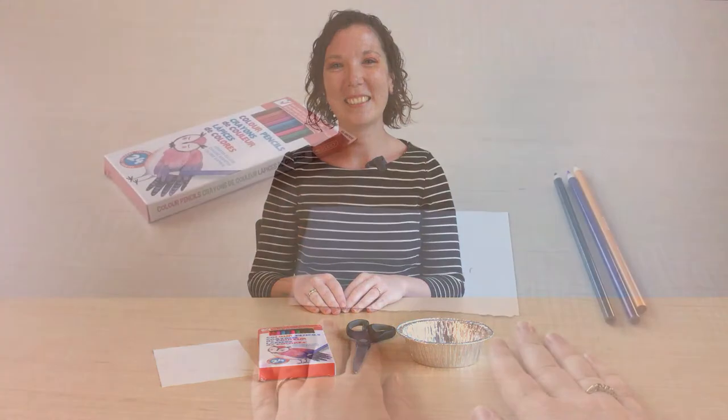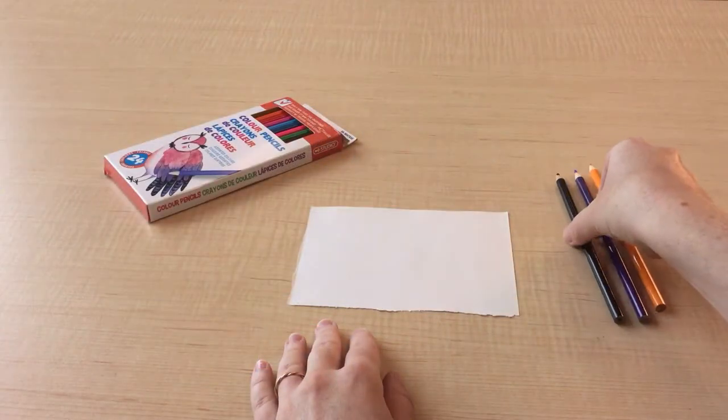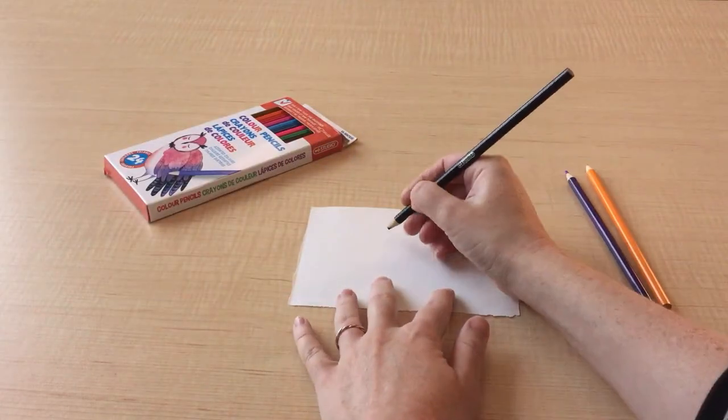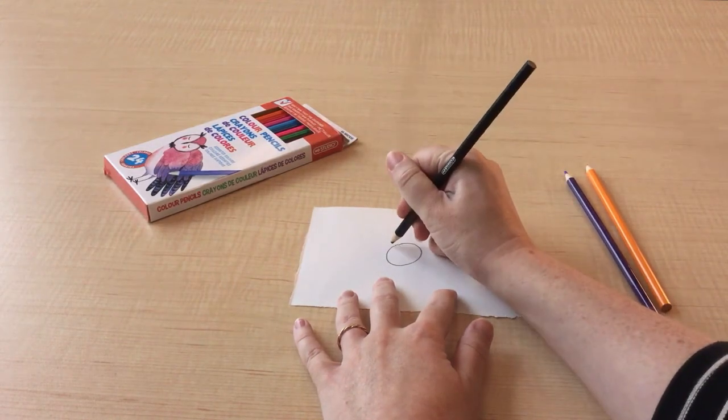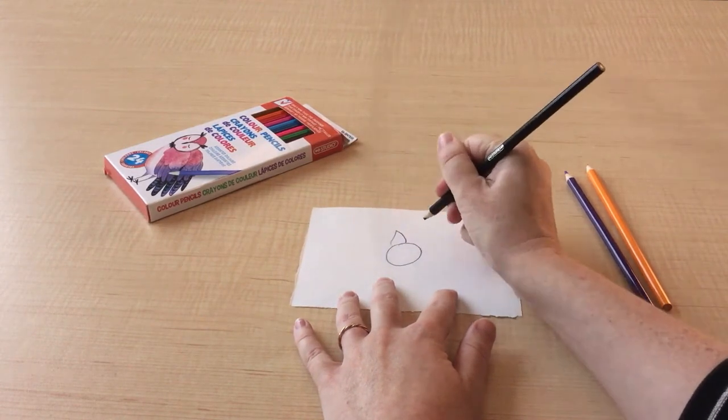Let's get started. On your paper, draw a flower with petals that you can fold down. Any design will work. Just make sure not to use felt pens as they'll run.